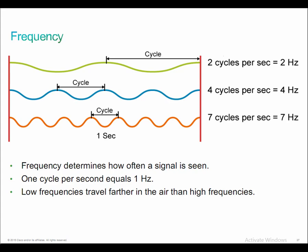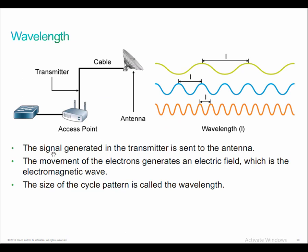Wavelength defines the space between the peaks of a particular signal. The signal gets generated at the transmitter, sent to the antenna, and the movement of electrons generates an electromagnetic field — that's what creates the electromagnetic wave. The size or cycle of that pattern is what we call the wavelength. An RF signal starts with an electrical AC signal generated by some sort of oscillator or transmitter, then sent through a cable to an antenna where it's radiated as an electromagnetic wireless signal.